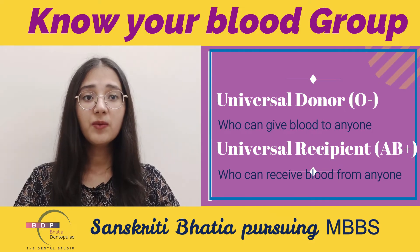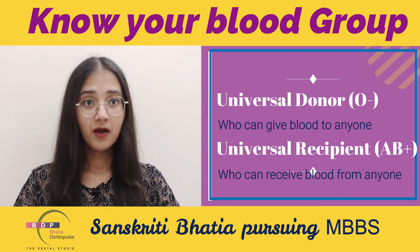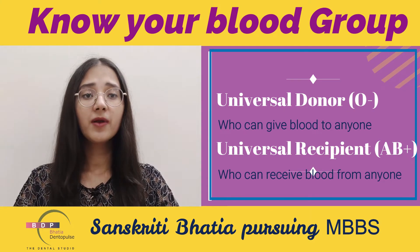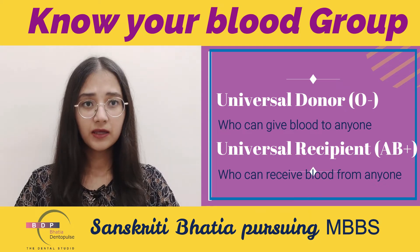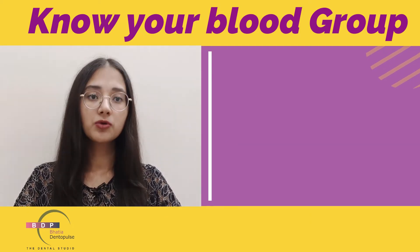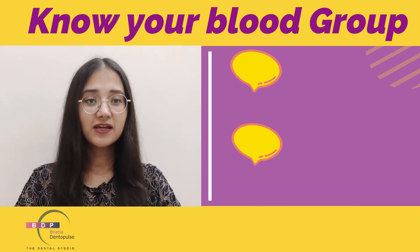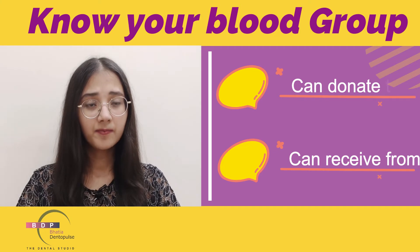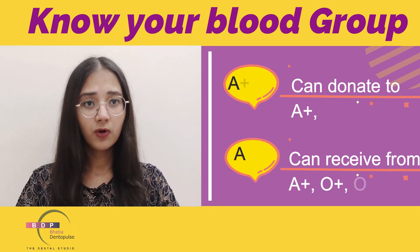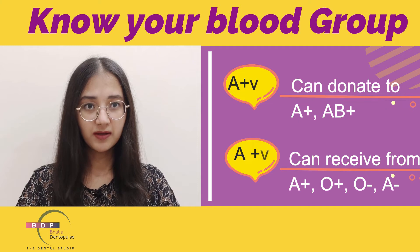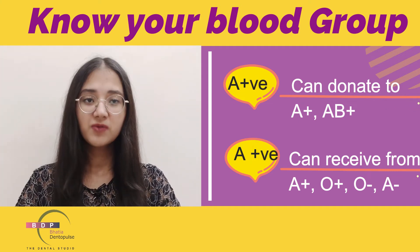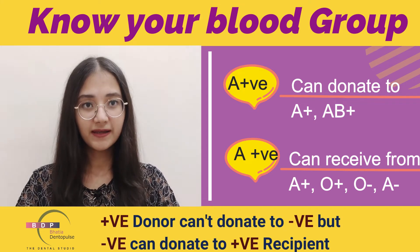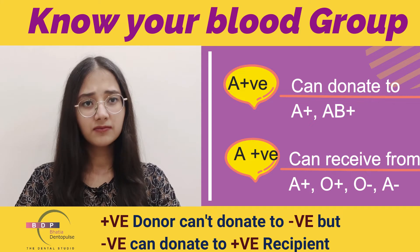AB positive is called the universal recipient because it can receive any blood group, as it already has every antigen. So O negative is the universal donor and AB positive is the universal recipient. For example, A positive can give blood to those who have A antigen — that is, A positive and AB positive. Also, a positive blood group will never donate to a negative blood group, but a negative blood group can give to a positive.